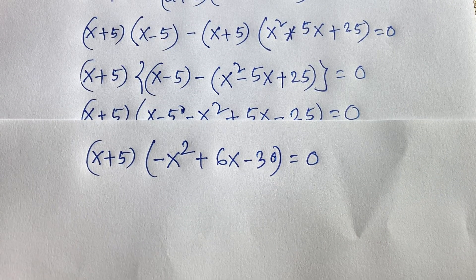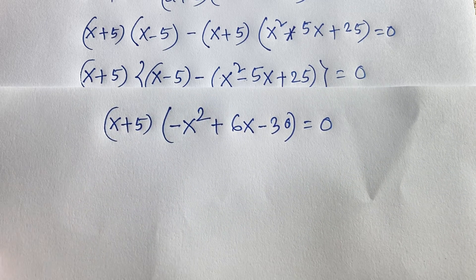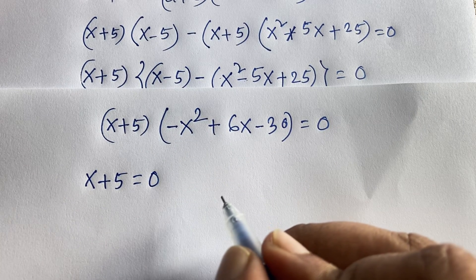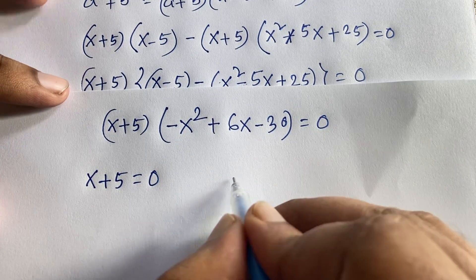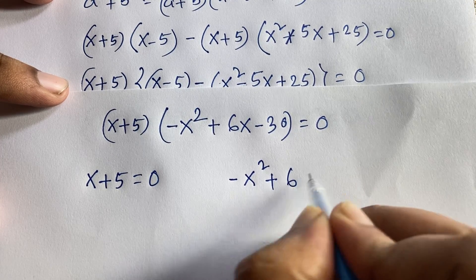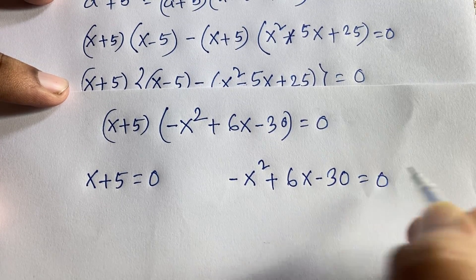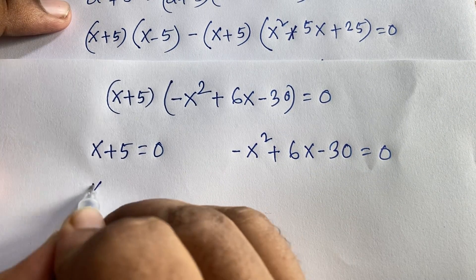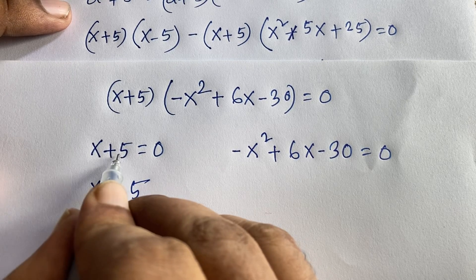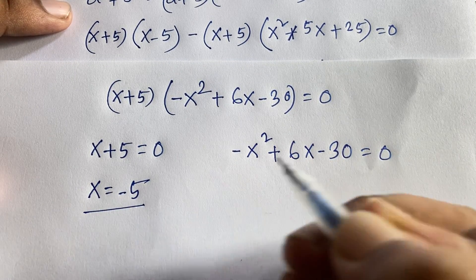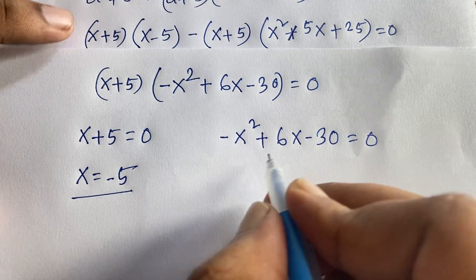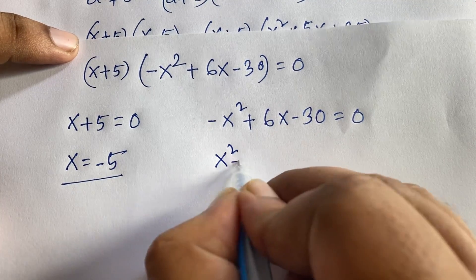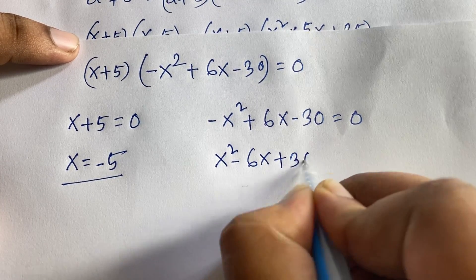We now have two cases. Case 1: x plus 5 equals 0, giving x equals minus 5. Case 2: minus x squared plus 6x minus 30 equals 0. Multiplying through by minus 1 gives x squared minus 6x plus 30 equals 0.